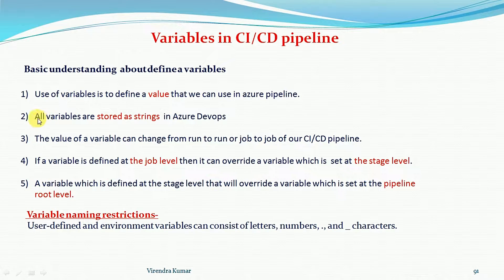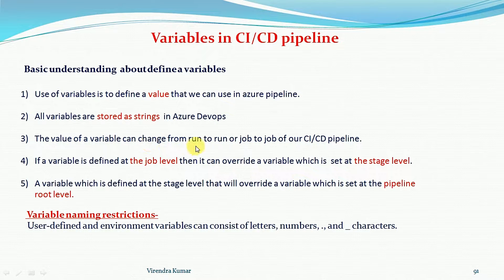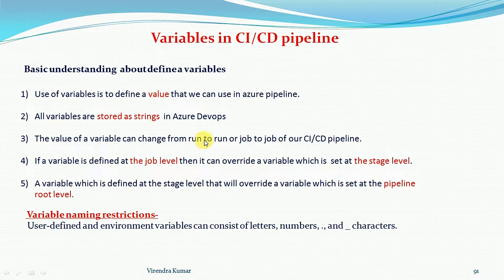All the variables are stored as a string in Azure DevOps. Whatever variables you are defining in Azure DevOps, these are stored as a string — not as numbers, and not in single quotes; you need to define them in double quotes. The value of the variables can change from run to run or job to job in our CI/CD pipelines, based on the job and the type of run.